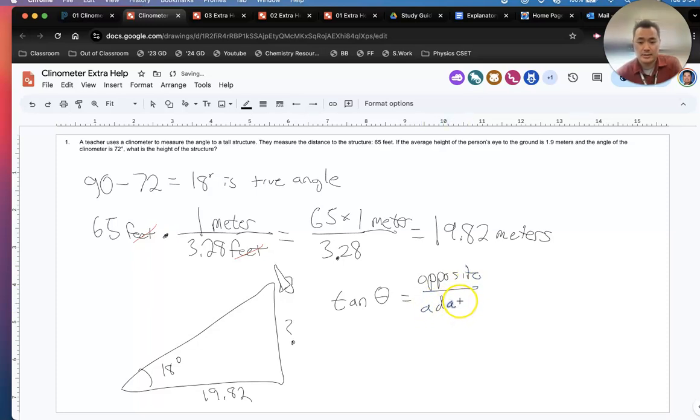All right, let's finish this. So tan theta equals opposite over adjacent. Now this is a math formula that is taught in many math classes. If it's new to you, you just have to trust the process and follow along.